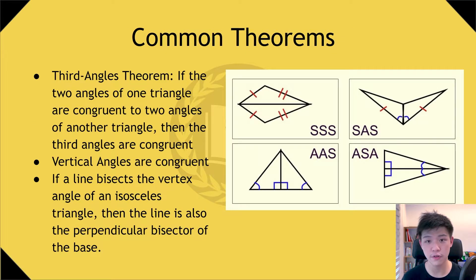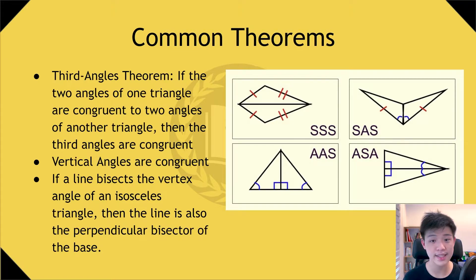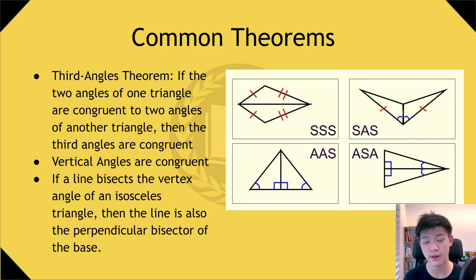So since we need to do proofs in the future, we need to know a lot of theorems. Here are a few that I think are most important. First is the third angles theorem. It states that if two angles of one triangle are congruent to two angles of another triangle, then the third angles are congruent. This is because all angles add up to 180 degrees, which means that when you subtract two angles from 180, you get the last angle.